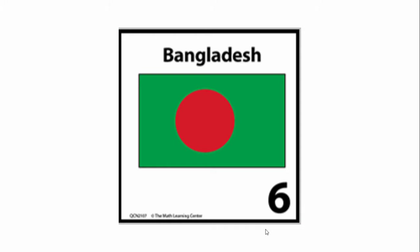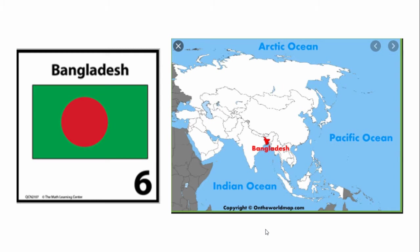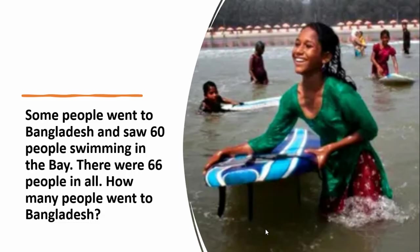Pause the video and discuss with your learning coach your observations. Here's a look at our calendar marker next to the map of Bangladesh. Here's our story problem: some people went to Bangladesh and saw 60 people swimming in the bay. There were 66 people in all. How many people went to Bangladesh?